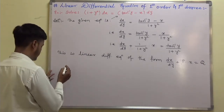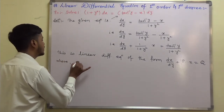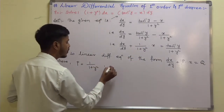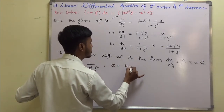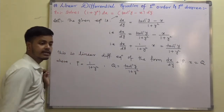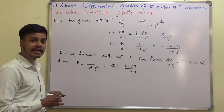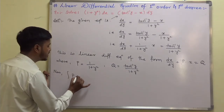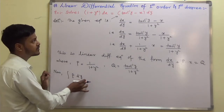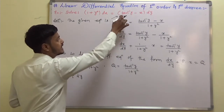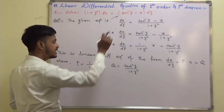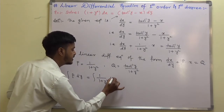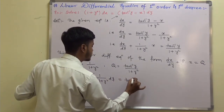Here P = 1 / (1 + y²) and Q = tan⁻¹y / (1 + y²). After getting P and Q, the next objective is to find the integrating factor. We first compute the integral of P dy, which is the integral of 1 / (1 + y²) dy, and the independent variable is y while x is the dependent variable. This integral equals tan⁻¹y.